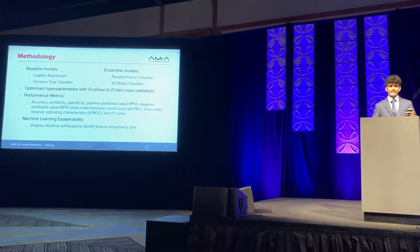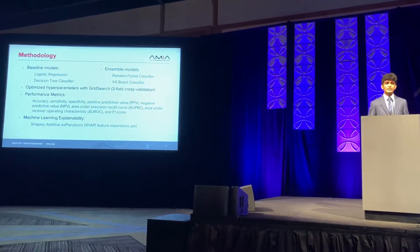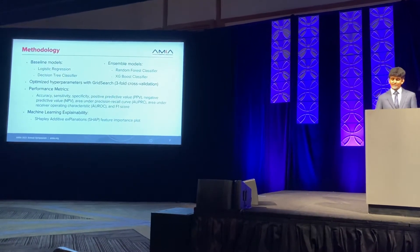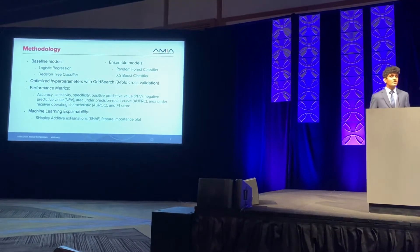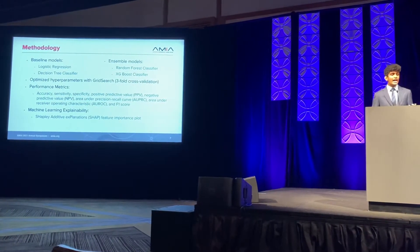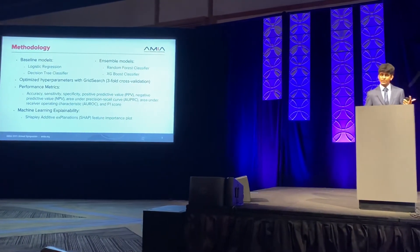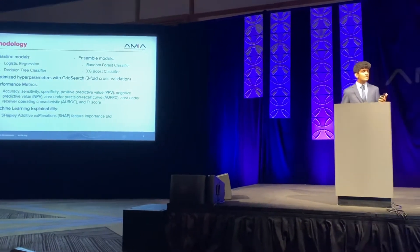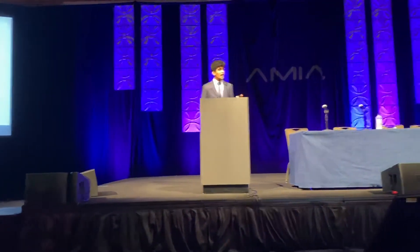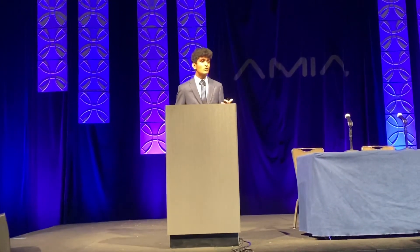The test-train split was 20% going to testing data and 80% going to training data. The performance metrics I'll use to evaluate the results are accuracy, sensitivity (true positive rate), specificity (true negative rate), positive predictive value or precision, negative predictive value, area under the precision-recall and receiver operating characteristic curves, and finally the F1 score.